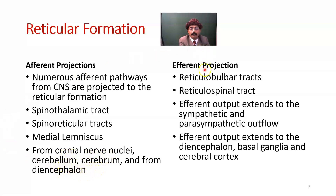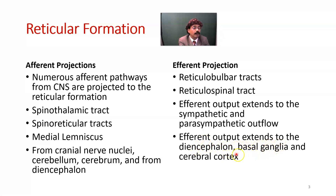For efferent projection, we get reticulobulbar tracts and reticulospinal tracts. The efferent output extends to the autonomic nervous system — the sympathetic and parasympathetic outflow. Sympathetic outflow is thoracolumbar outflow; parasympathetic outflow is craniosacral outflow. They are connected to the reticular formation. Efferent output also extends to the diencephalon, basal ganglia, and cerebral cortex.